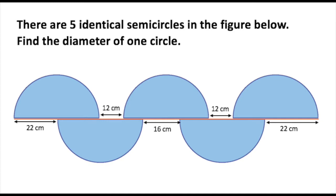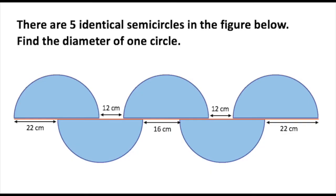In this video, I'm going to show you the one-step solution to the 2019 PSLE math paper that's gotten kids leaving the exam hall crying. The question is really simple: there are five identical semicircles in the figure below. Find the diameter of one circle. If you haven't seen the question, please pause the video and ask yourself how you would do this.